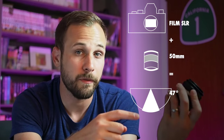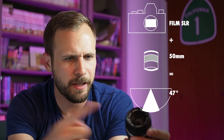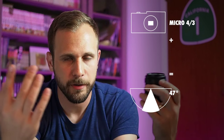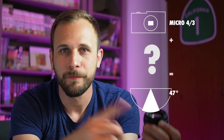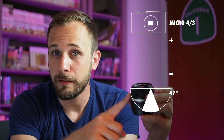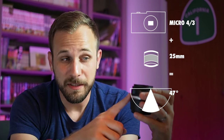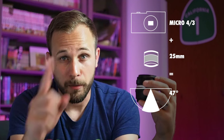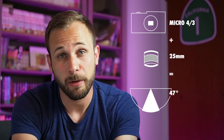The math also works the other way around. Let's say I really like the field of view a 50mm lens gives me on an old film camera and I want that same field of view on Micro Four Thirds. I take that same 2.0 crop factor and divide: 50 divided by 2 equals 25. So if you want that field of view on a Micro Four Thirds camera, you get a 25mm lens.